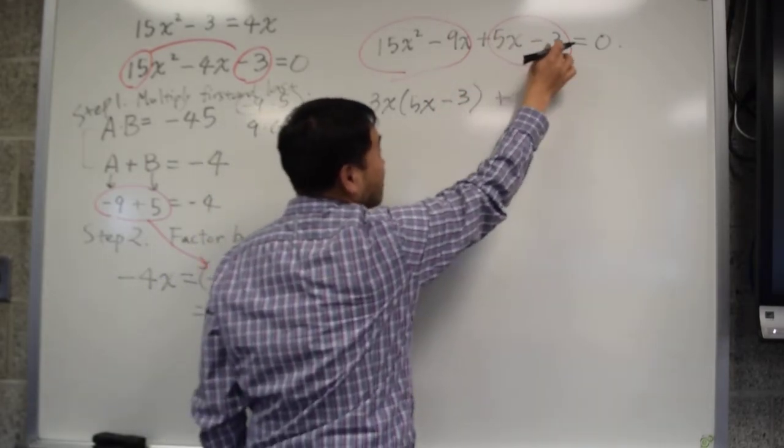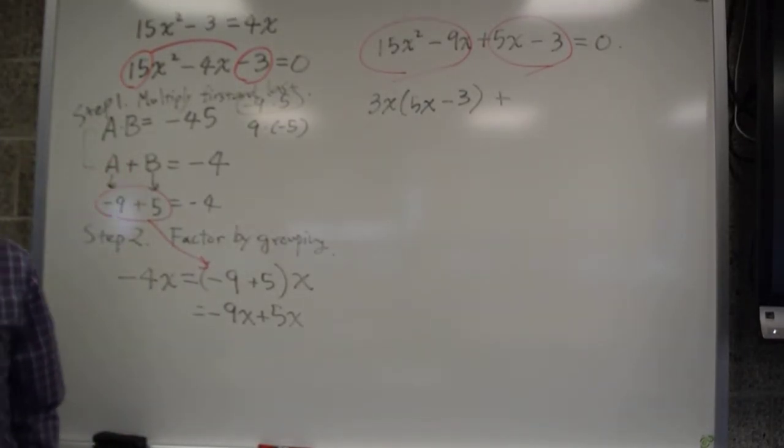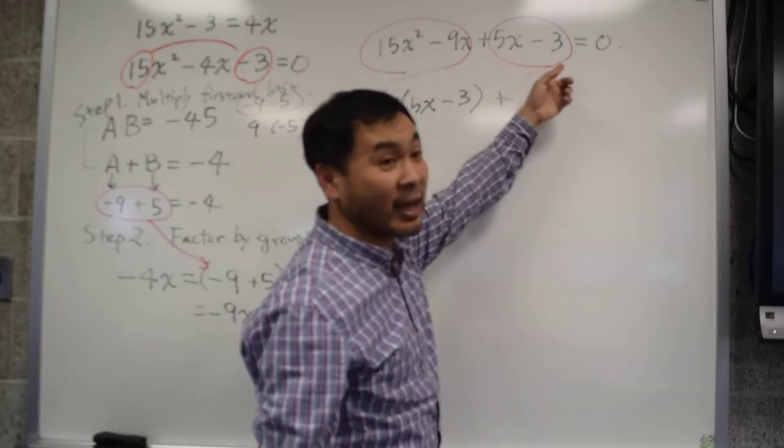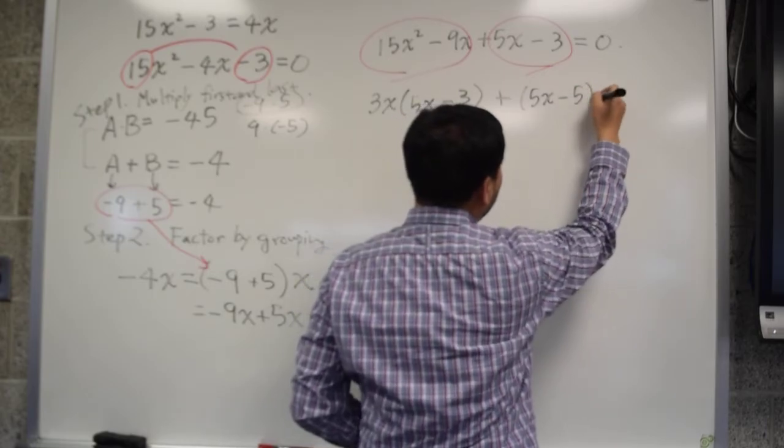Now, what's the greatest common factor between 5 and negative 3? Well, there isn't any. They do not share any common factor other than 1, right? In this case, you can't factor.